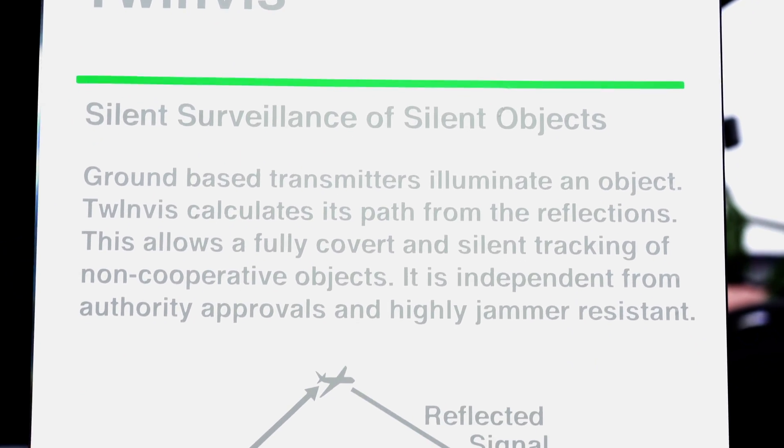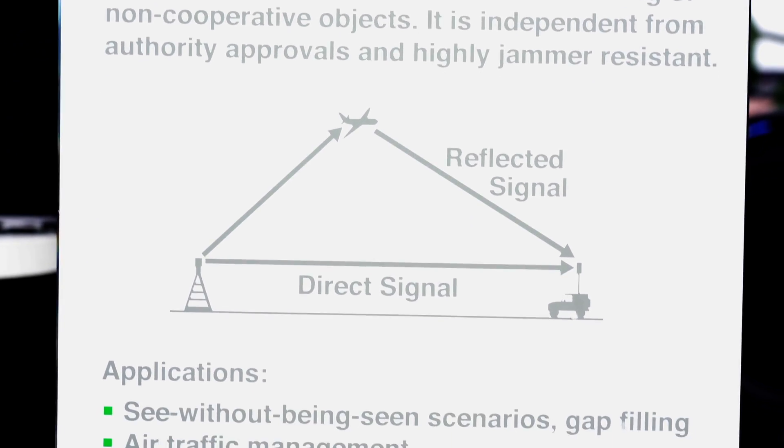Another capability of TwinVis passive radar is 3D capability. You only need one sensor to already provide operators with 3D information. We have an accuracy in latitude and longitude of about 50 to 100 meters, and in altitude there is also some information — a little less accurate, but you get an indication of what altitude your target is flying at, with an accuracy of about 500 to 1000 meters.